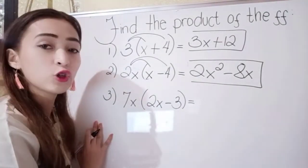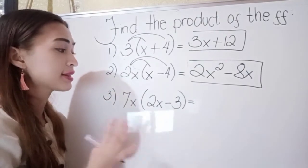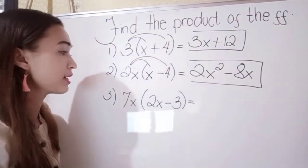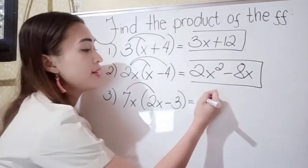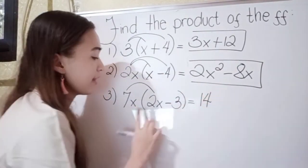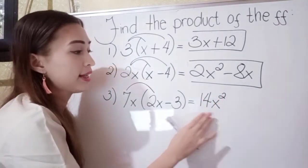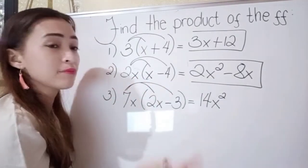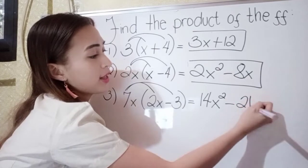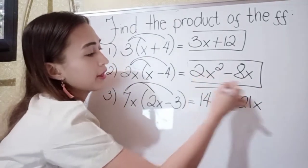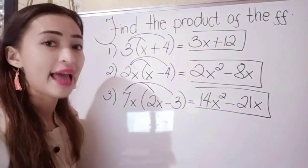For number 3, we will use the distributive property. We have 7x times 2x minus 3. So 7x times 2x: 2 times 7 is 14, and x times x is x squared, giving us 14x squared. Next, 7x times negative 3 is negative 21x. So our final answer in number 3 is 14x squared minus 21x.